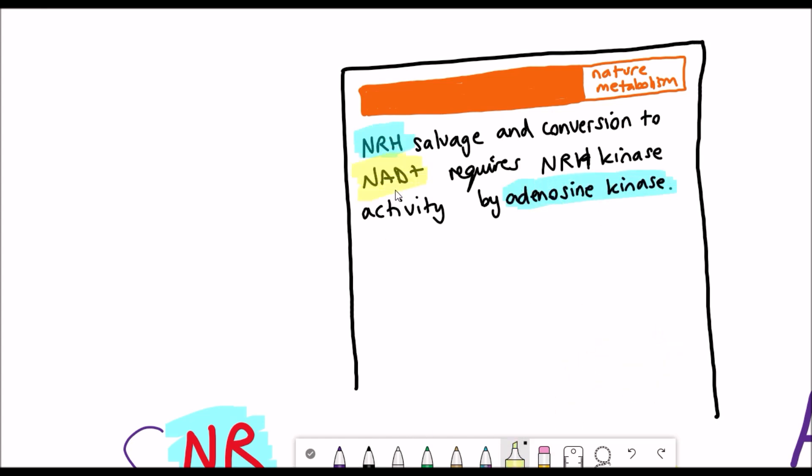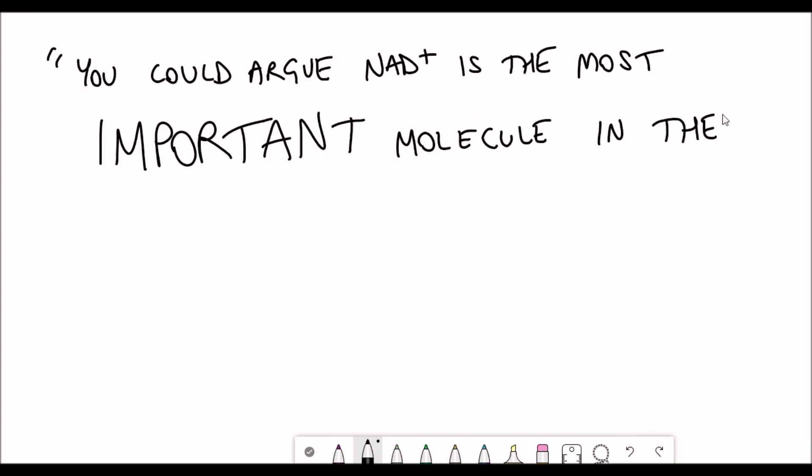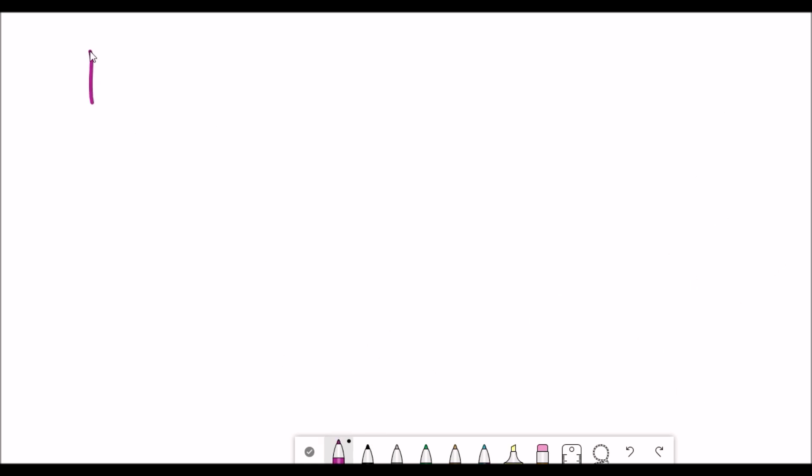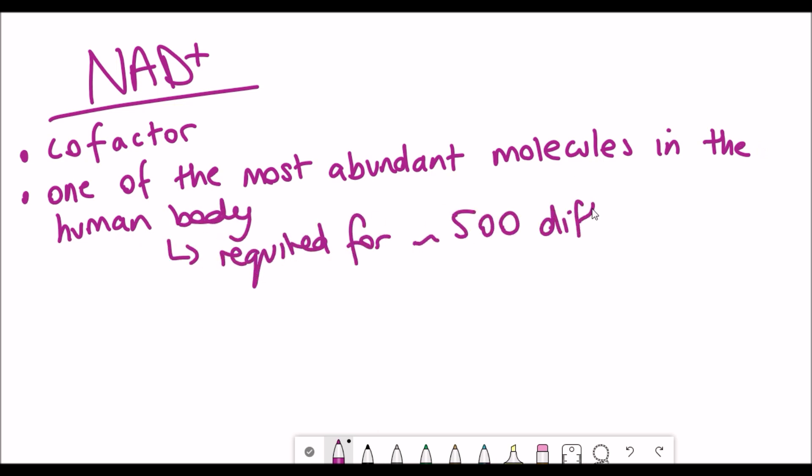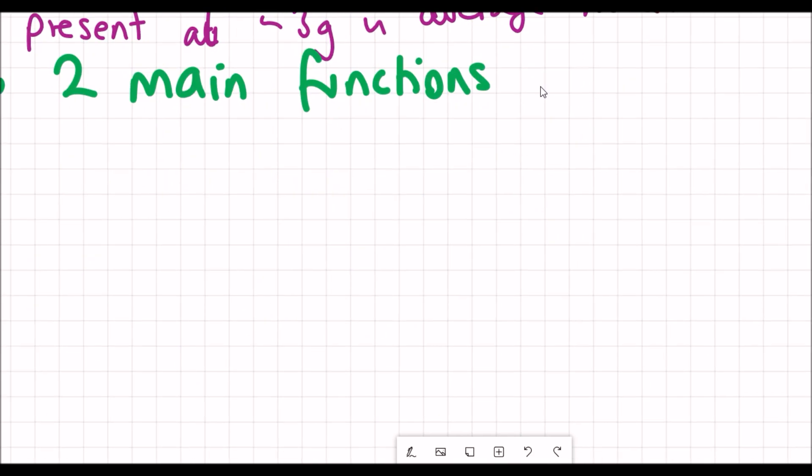Before I explain NRH and adenosine kinase, we first need to explain NAD plus and why you would want to have high levels. You could argue that NAD plus is the most important molecule in the body, maybe with the exception of ATP, but without either of them you're dead within 30 seconds. NAD is a really important co-factor in the body and it's very abundant and has a lot of functions, but it can be split down into two main functions.